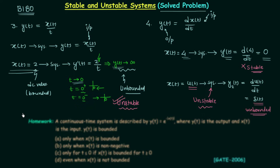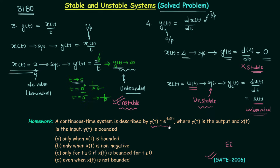This is all for problem number 4. Now we will move to the homework problem, taken from the GATE 2006 Electrical Engineering paper. The problem states: a continuous time system is described by y(t) = e^(−|x(t)|). Complete the sentence: y(t) is bounded — only when x(t) is bounded; only when x(t) is non-negative; only for t ≤ 0; if x(t) is bounded for t ≥ 0; or even when x(t) is not bounded. Choose the correct option and post your answer in the comments.